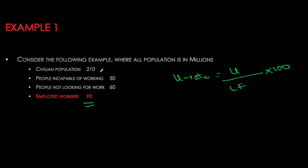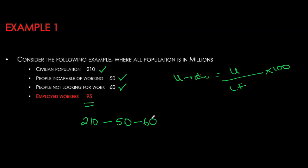So let's look at the numbers given to us. We have 210 million people as our total civilian population. People incapable of working — we can assume them to be under the age of 15 — are 50 million. Then we also have 60 million people who are not looking for work; they could be 15 and older but they are not part of the labor force. Using deduction: from 210 million, subtract the 50 million incapable of working, the 60 million not looking for work, and the 95 million who are employed. That gives us 5 million unemployed workers.